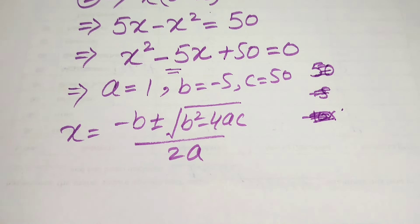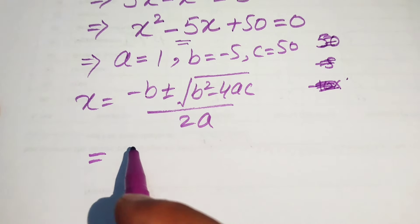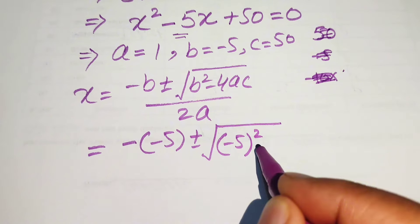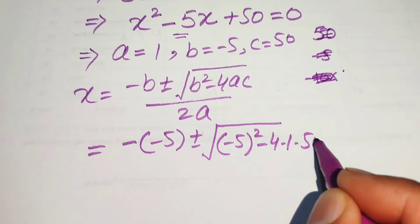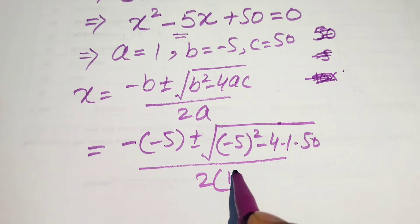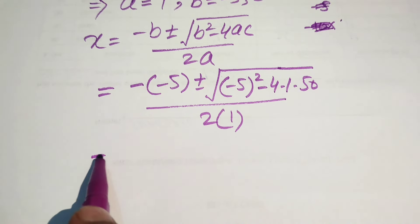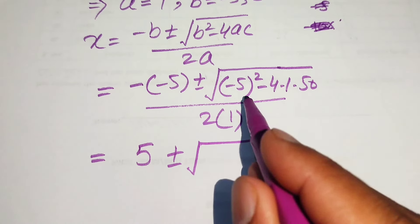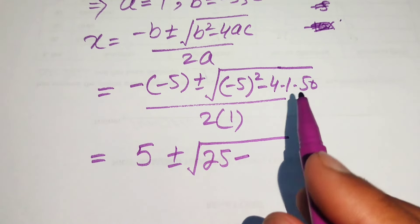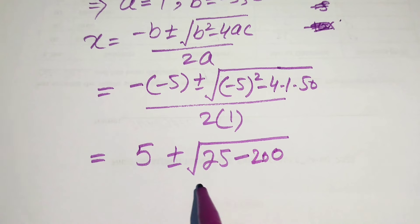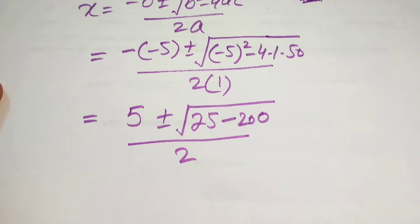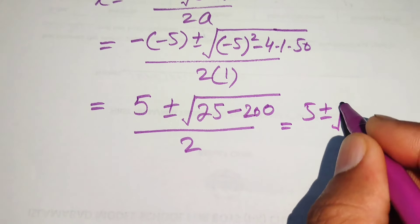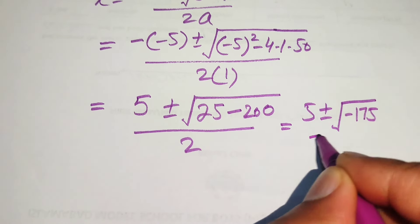Now we substitute the values of a, b, and c into the formula. We have minus of minus 5, which becomes plus 5, plus or minus square root of minus 5 squared minus 4 times 1 times 50, divided by 2 times 1. That gives us 5 plus or minus square root of 25 minus 200, divided by 2, which simplifies to 5 plus or minus square root of minus 175, divided by 2.